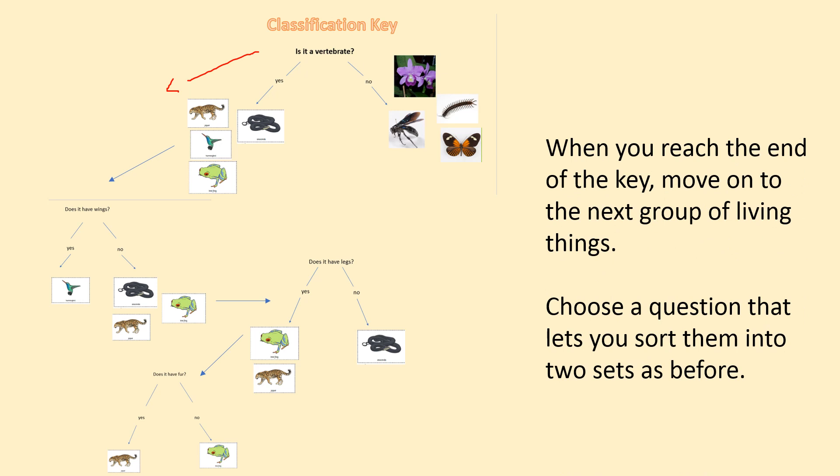When you reach the end of your key, you can move on to the next group of living things and repeat the process — choose a question that lets you sort them into two sets as before. In your main activity, you'll have different pictures on the online learning website. If you have a printer you can print it out; if not, you can write this out. You don't need to draw the picture for each section — you can just write it down, and at the end maybe stick your pictures in.